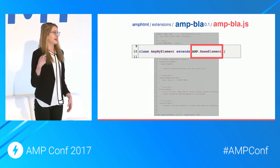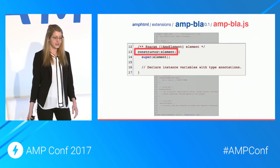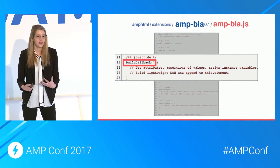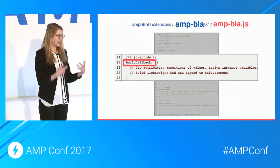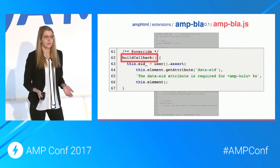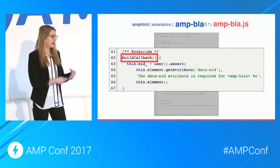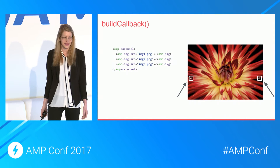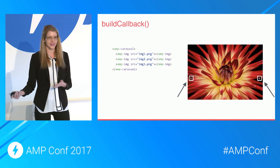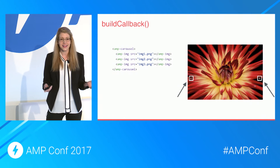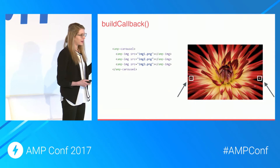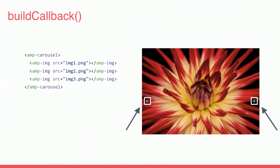Most AMP elements extend the base element. You're going to have a constructor to initiate your variables, and then there's the build callback. In the build callback you want to validate that your element was created properly — for example, AMP Hulu requires a video ID, so you can have those validations there. You can also manipulate the DOM in the build callback. Going back to the AMP carousel example, nowhere in the HTML does a developer see arrows or buttons — the developer never had to deal with that — and in the build callback you can add those manipulations and all the functionality.